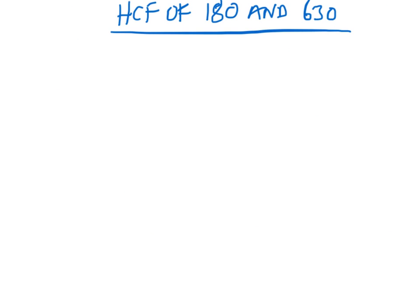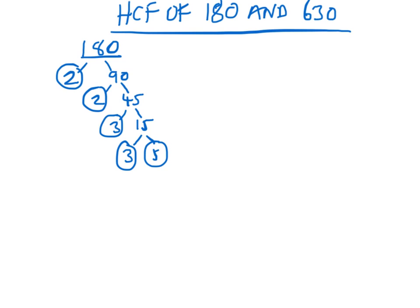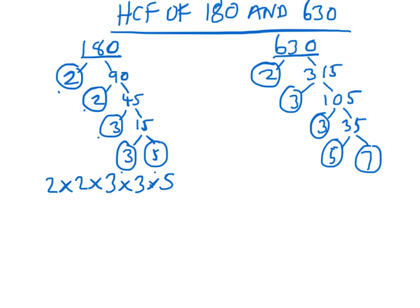Let's have a look at the highest common factor of 180 and 630. The factor spiders would be quite tricky because there are loads of factors for these numbers, but the prime factor decomposition isn't quite so bad. For 180, I've got 2 times 2 times 3 times 3 times 5. And for 630, we've got 2 times 3 times 3 times 5 times 7.